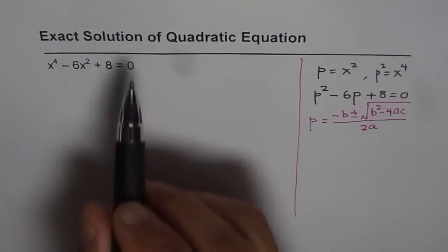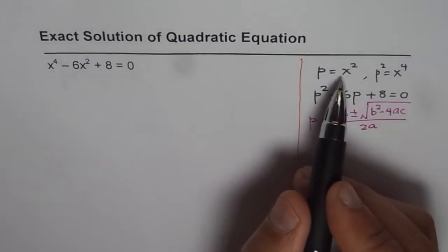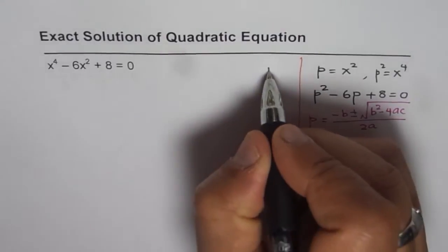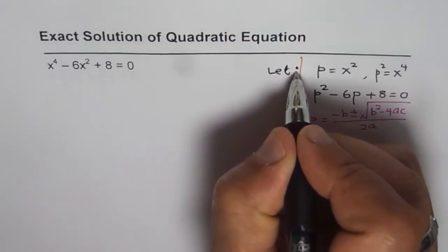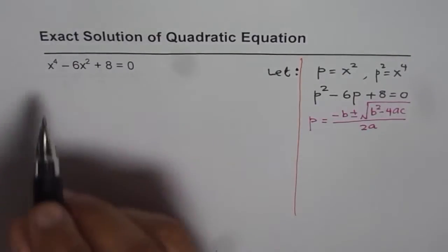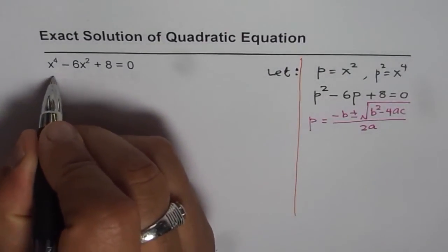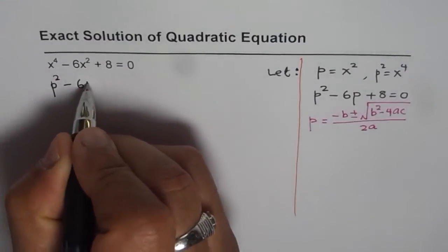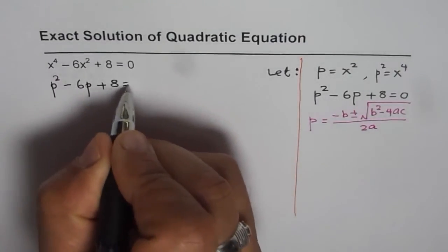Let us solve this equation. First, we will substitute p as x squared. Let that be our let statement. We say: let p equal x squared, then p squared will be x to the power of 4. We can rewrite our equation as p squared minus 6p plus 8 equals 0.